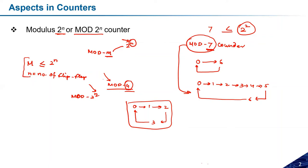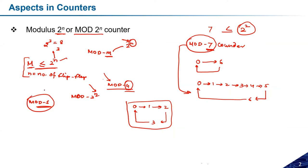For mod-4, with N equals 2, the condition 4 less than or equal to 2^2 is satisfied, so 2 flip-flops are needed. For mod-5, N equals 2 gives maximum value 4, which doesn't satisfy the condition, so increase N to 3: 2^3 equals 8, which satisfies mod-5. Therefore 3 flip-flops are needed to design a modulus-5 counter. The number of flip-flops required depends on how many sequences you want to generate.